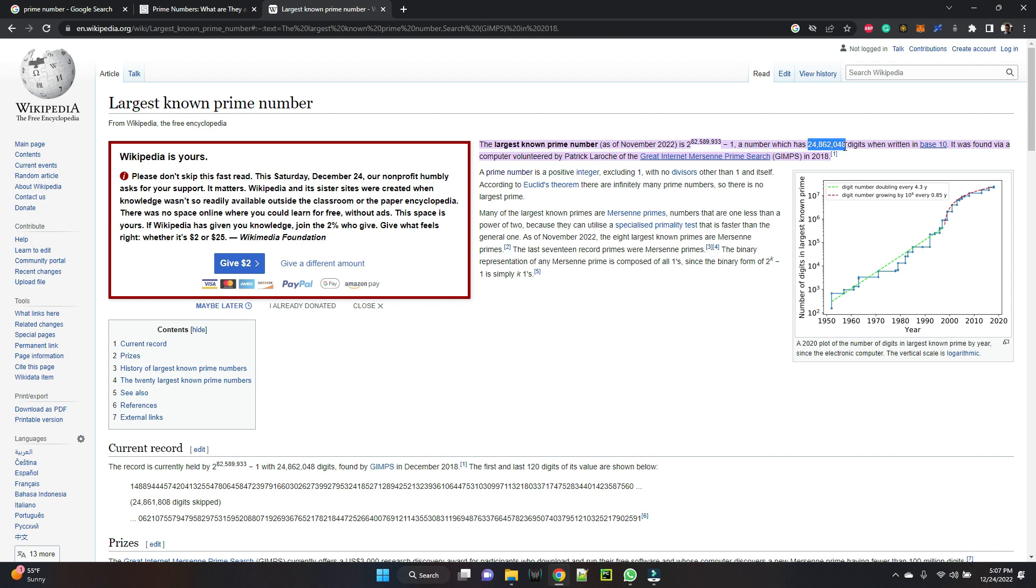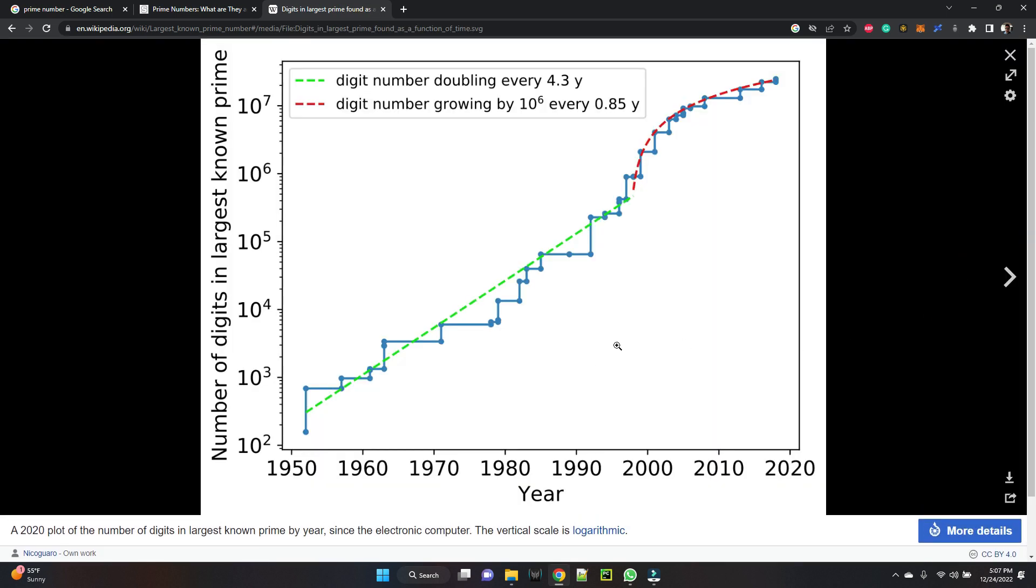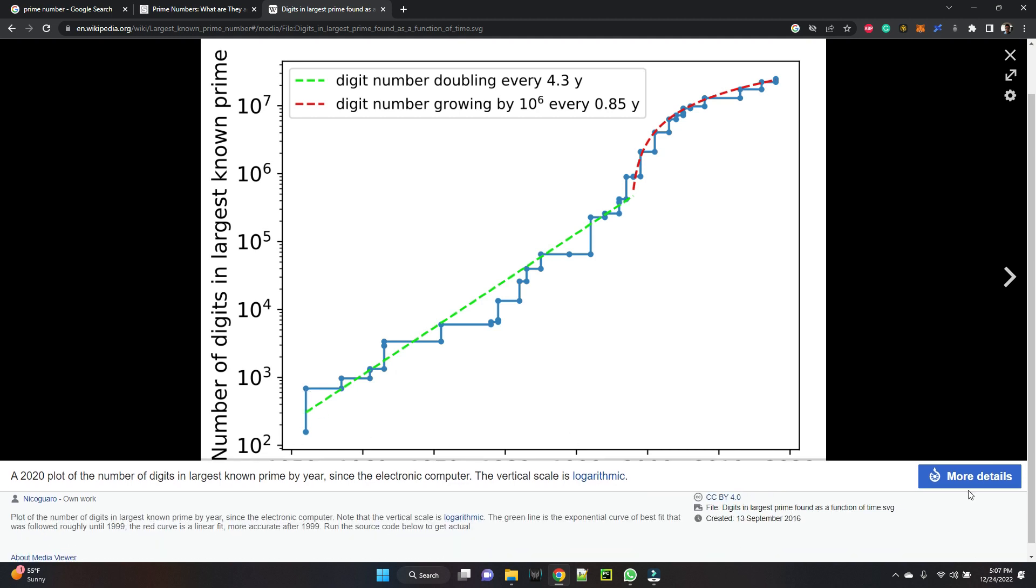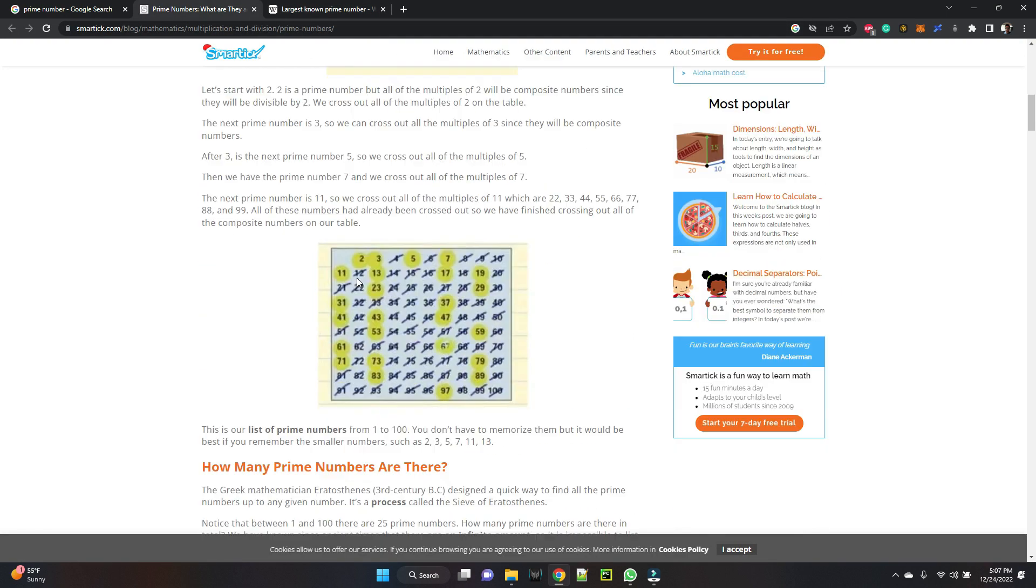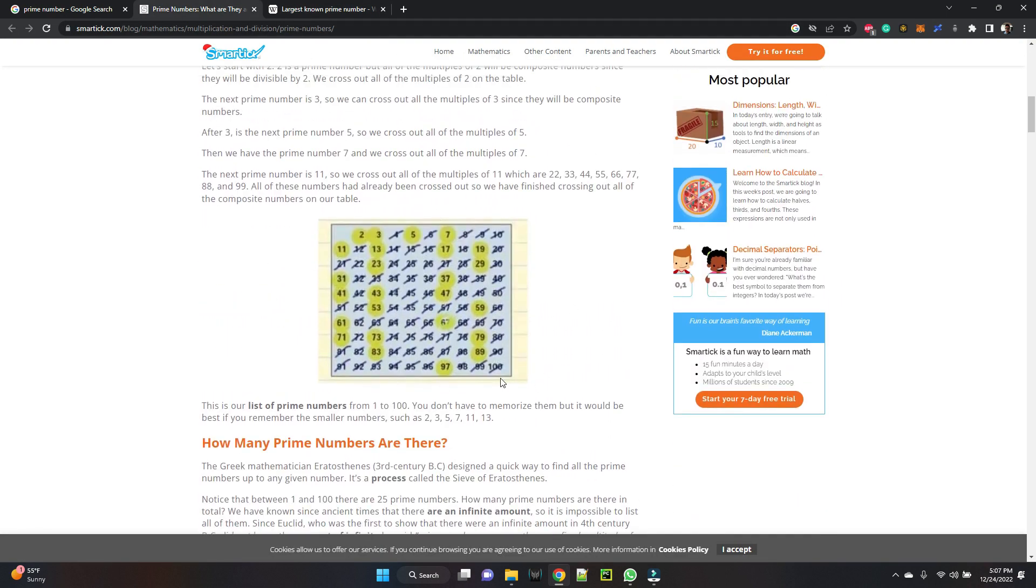As of November 2022, the value is 2 raised to 82,589,933 minus 1. That is the biggest prime number. How many digits are there? 24,862,048 digits are there in the prime number. If we look at this chart, values for prime numbers have been changing as people identify different prime numbers. We don't need to know all these prime numbers; we just need to have some idea about prime numbers up to 100.